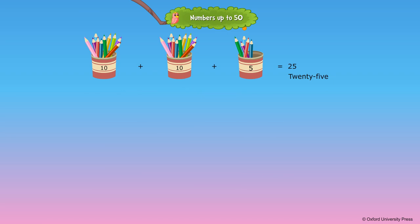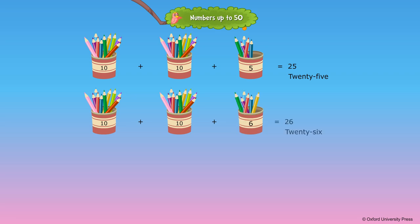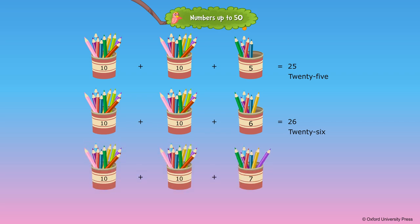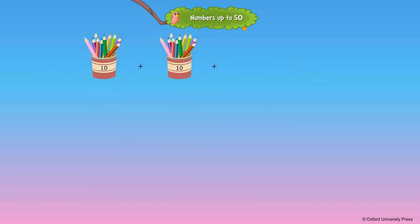20 plus 5 is equal to 25. 20 plus 6 is equal to 26. 20 plus 7 is equal to 27. 20 plus 8 is equal to 28.